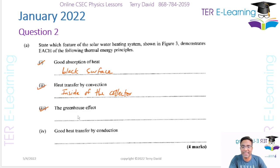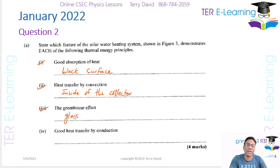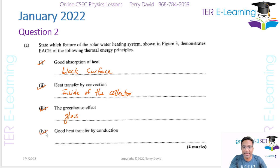The next part is the greenhouse effect. The design feature that allows for the greenhouse effect is the sheet of glass. The glass allows shortwave radiation to enter and prevents longwave radiation from leaving — that's the greenhouse effect. The glass behaves similarly to how our atmosphere and Earth behave as well.